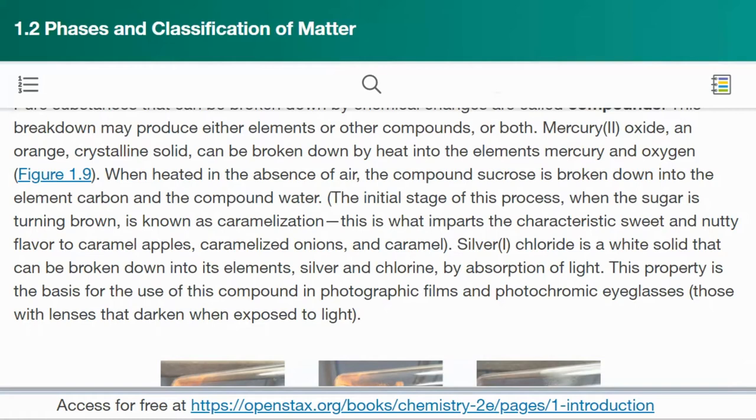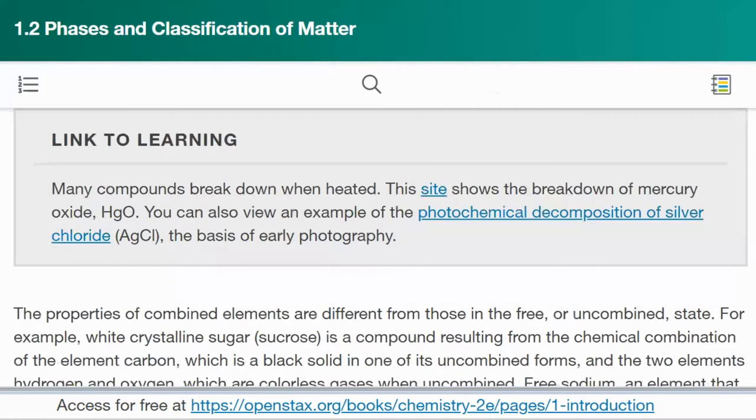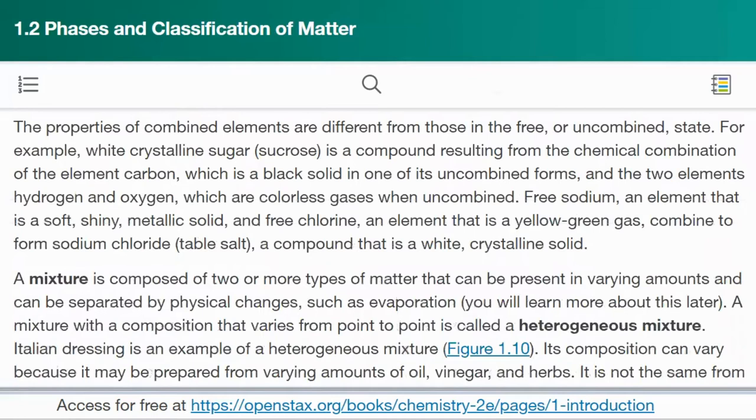Silver(I) chloride is a white solid that can be broken down into its elements, silver and chlorine, by absorption of light. This property is the basis for the use of this compound in photographic films and photochromic eyeglasses (those with lenses that darken when exposed to light). Many compounds break down when heated. You can also view an example of the photochemical decomposition of silver chloride, the basis of early photography. I'm going to skip going into that site.